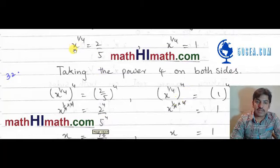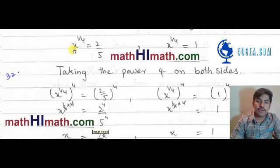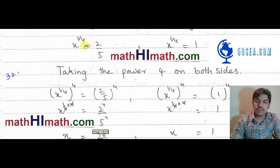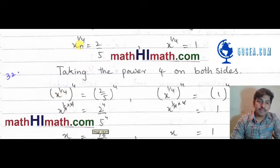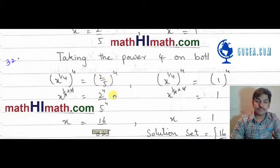اب x کو اکیلا کرنے کے لیے، یعنی x کی value find out کرنے کے لیے، ہم ان دونوں equations میں equal sign کے دونوں sides پر power 4 لے لیتے ہیں۔ تو x کی power 1 over 4 کی power 4 is equal to 2 over 5 کی power 4.